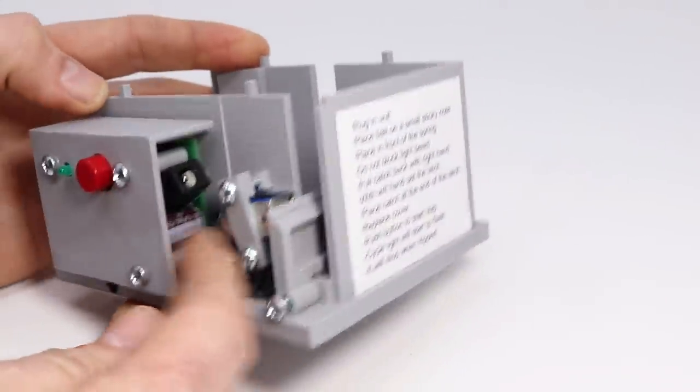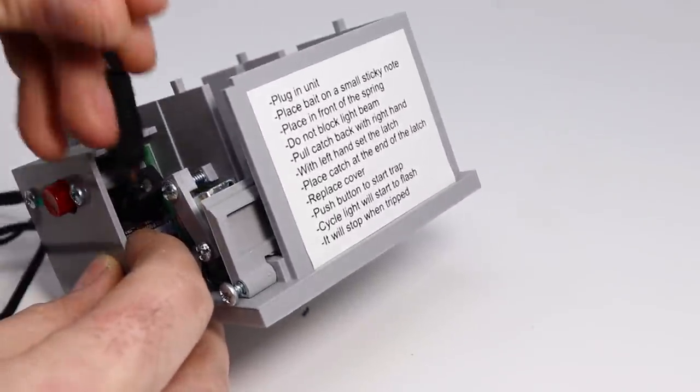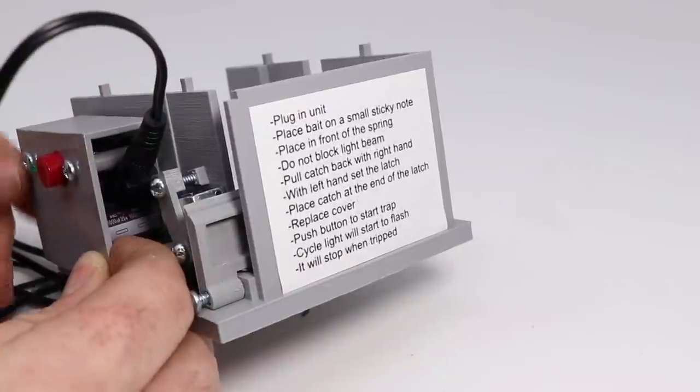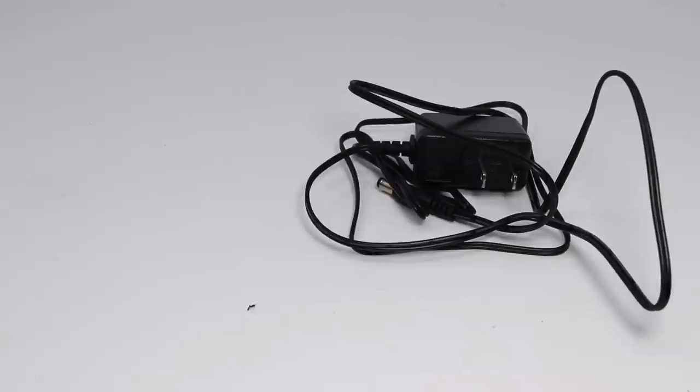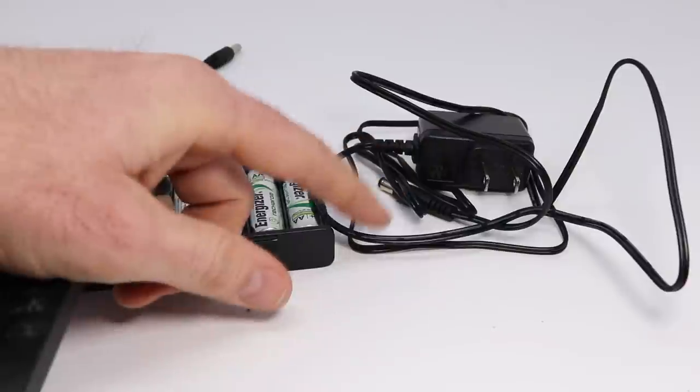Now over here are the electrical components, the circuits, and the power source. You plug it in right there. Now there are two plug-in options. The first is a wall plug and the second is a battery pack that takes eight AA batteries. We're going to use this in the barn when there's no power source.